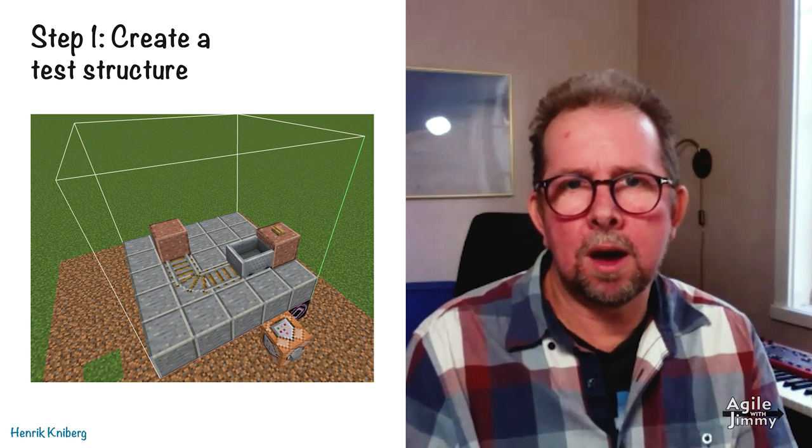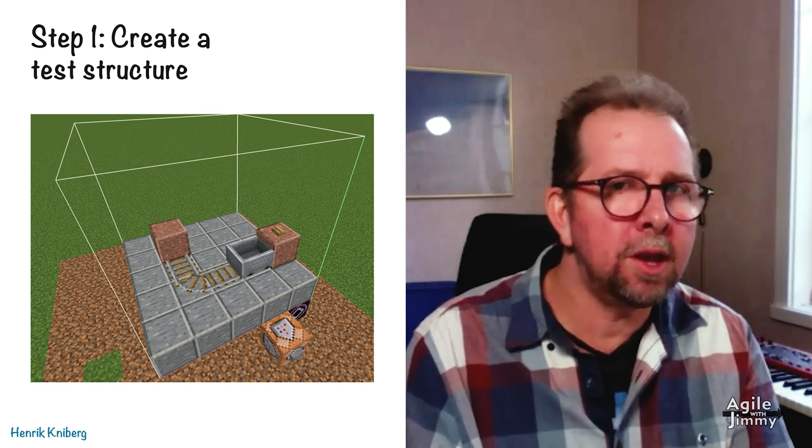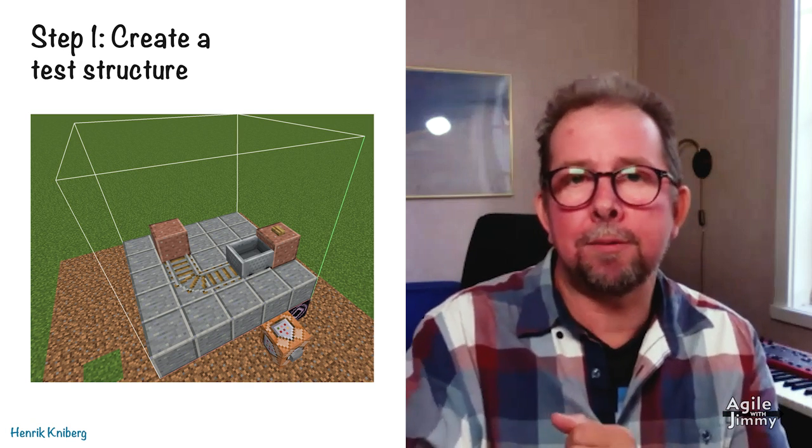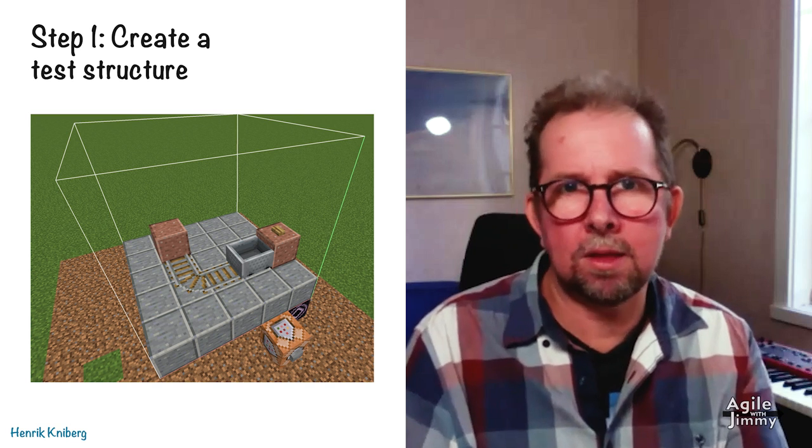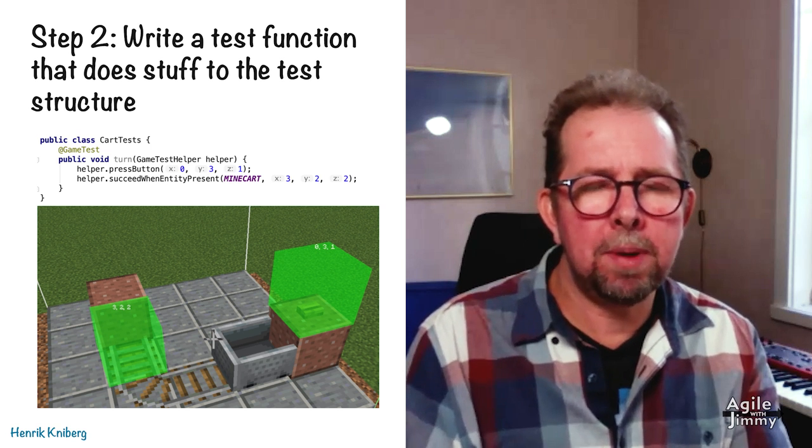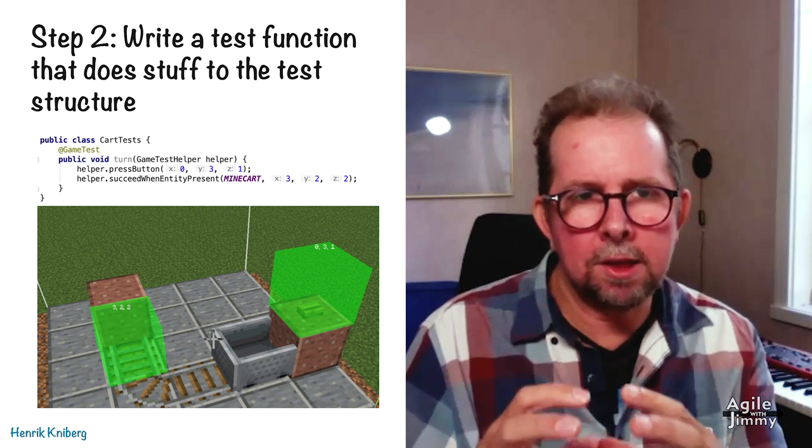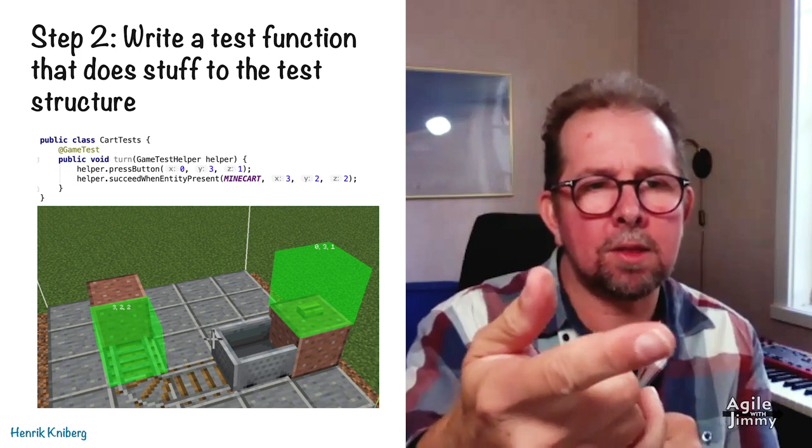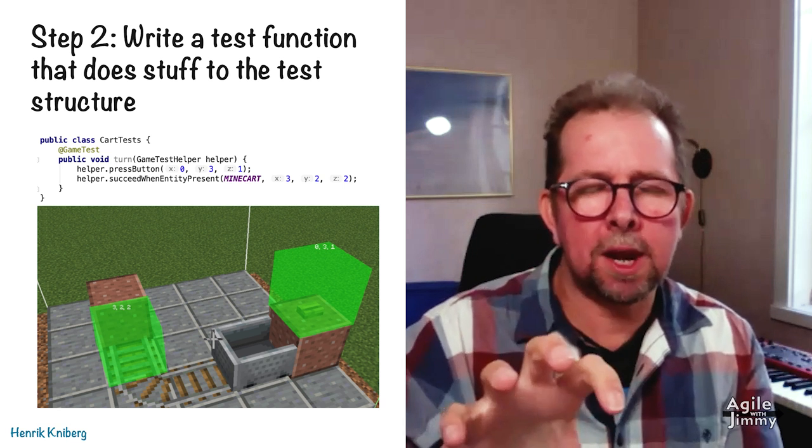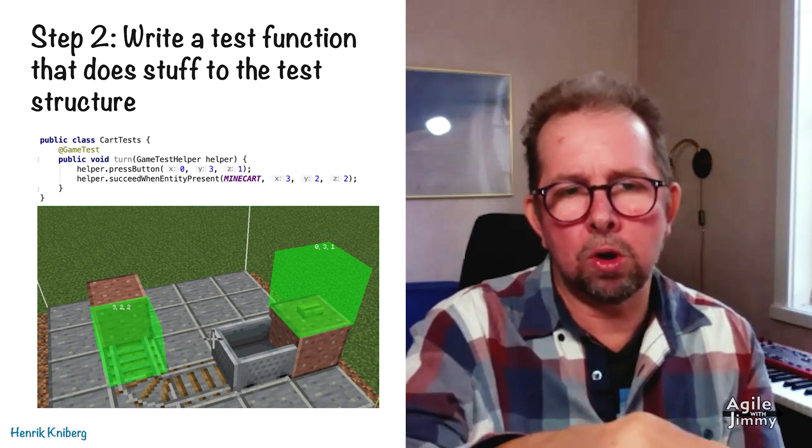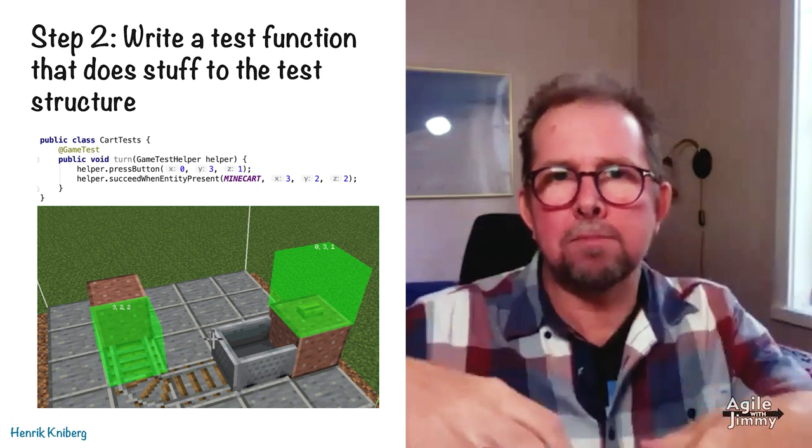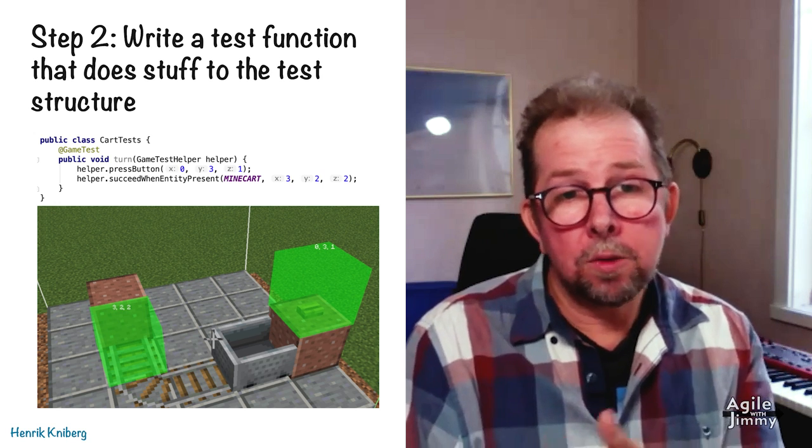Example, let's say I wanted to do this cart turning on a rail thing. The first thing I do is I create a test structure and we have some utilities for that. You can type basically slash test create, and then boom, you have this kind of platform. And then you basically build your little structure on it. It takes like two minutes. Next, I got to write some code. So we created a very lightweight framework with a helper class. Using that helper class, you can basically operate on your structure. As long as your structure that you created is named the same as your test function, in this case cart tests turn, as long as the names match, they will find each other. The test framework will automatically make them find each other. It'll automatically find and generate the structure that I created manually. And then it'll, in this case, press the button at coordinates 0, 3, 1, and then wait until the mine cart arrives in the right position. Since all coordinates are relative, it's quite easy.